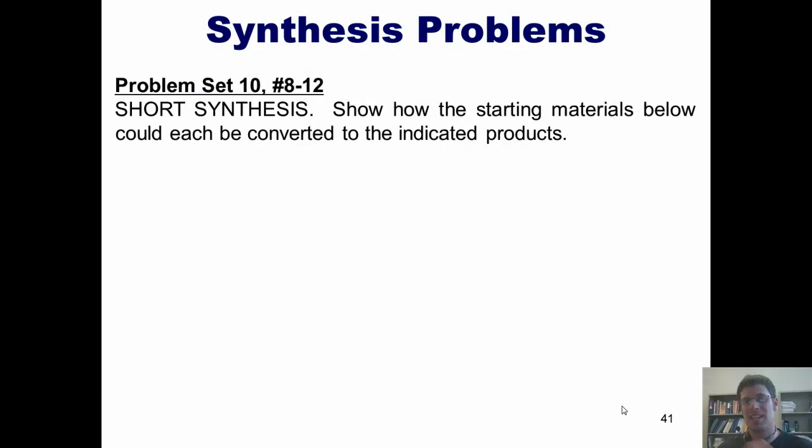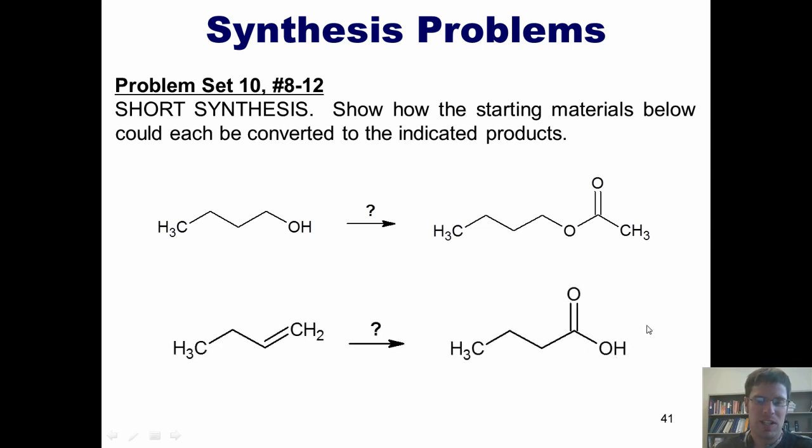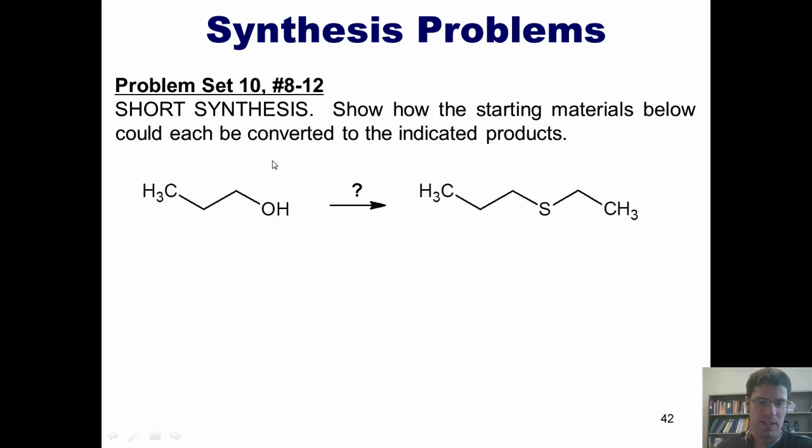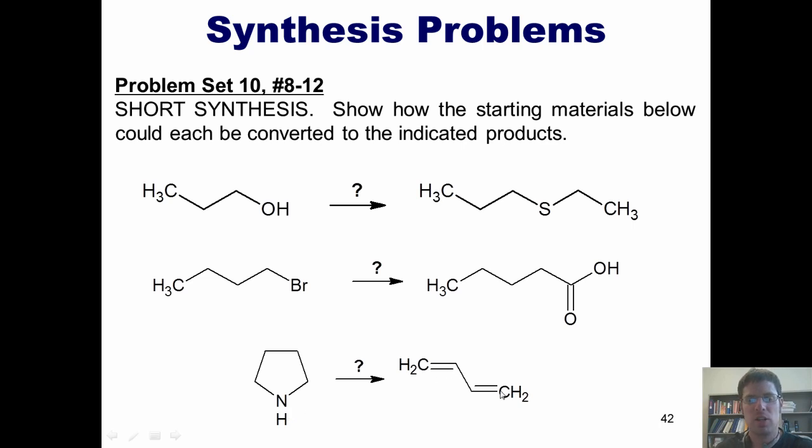I want to finish by showing you some synthesis problems. For students who are taking this from me, we will work as many of these out as you'd like to together in class. I, of course, encourage you to attempt them all on your own before coming to class. Here is the question: Show how the starting materials below could each be converted to the indicated products. Here's one, a primary alcohol being converted to this molecule called an ester. Separately, I've got an alkene being converted to this carboxylic acid. Additionally, I've got this primary alcohol being converted to this sulfide. And here I've got this primary bromide being converted to this carboxylic acid. And lastly, I've got this molecule, which is a cyclic amine, being converted into this unusual diene.